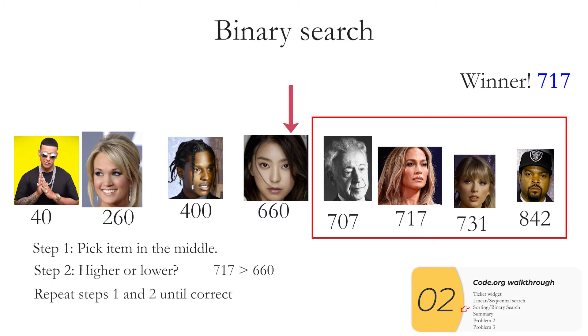And then I'll repeat the process over and over again. So from what's remaining I'll pick an item in the middle. That happens to be 717. I found my winner. I found what I'm looking for. That happens to be 717 and I'm done.